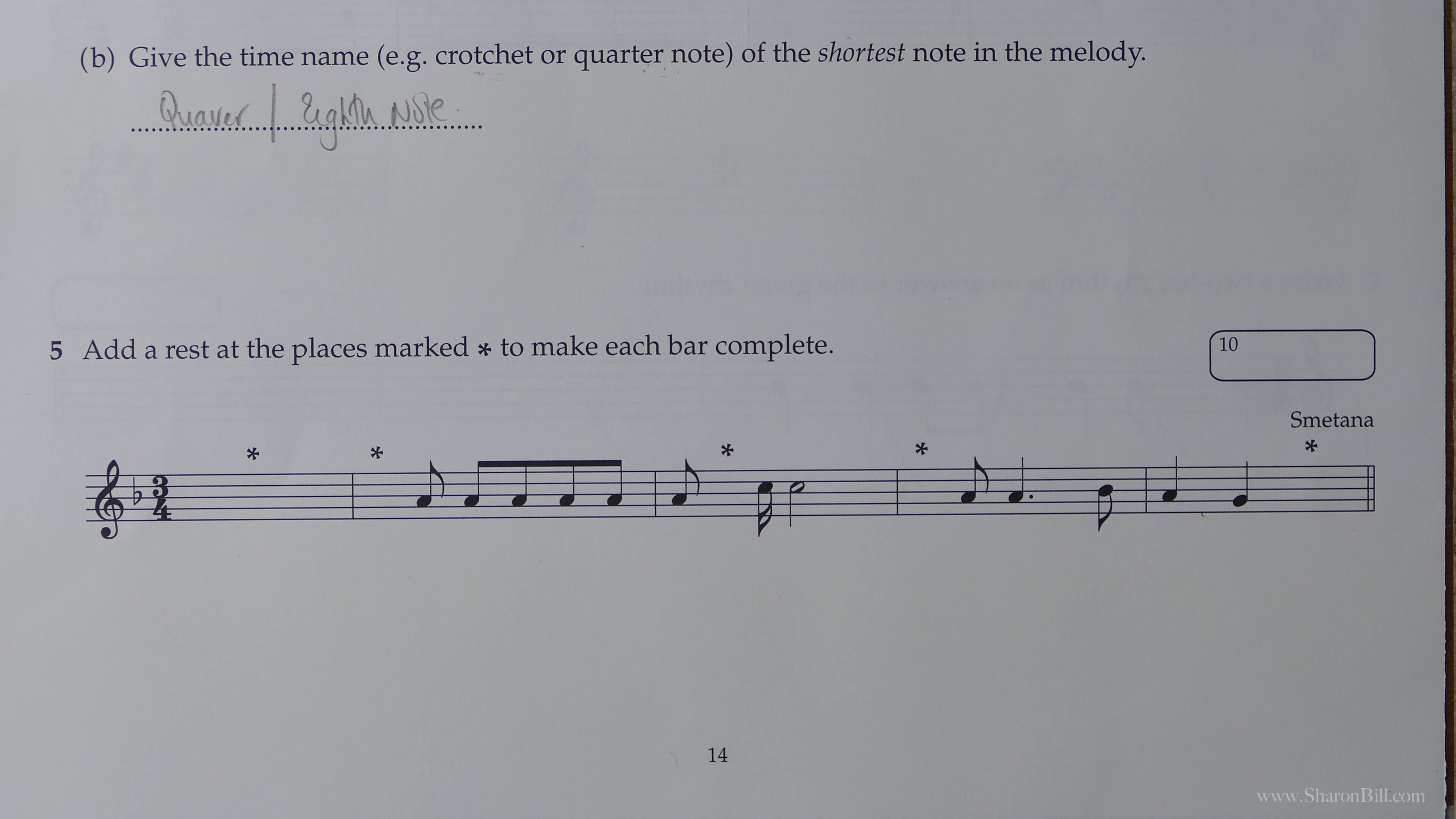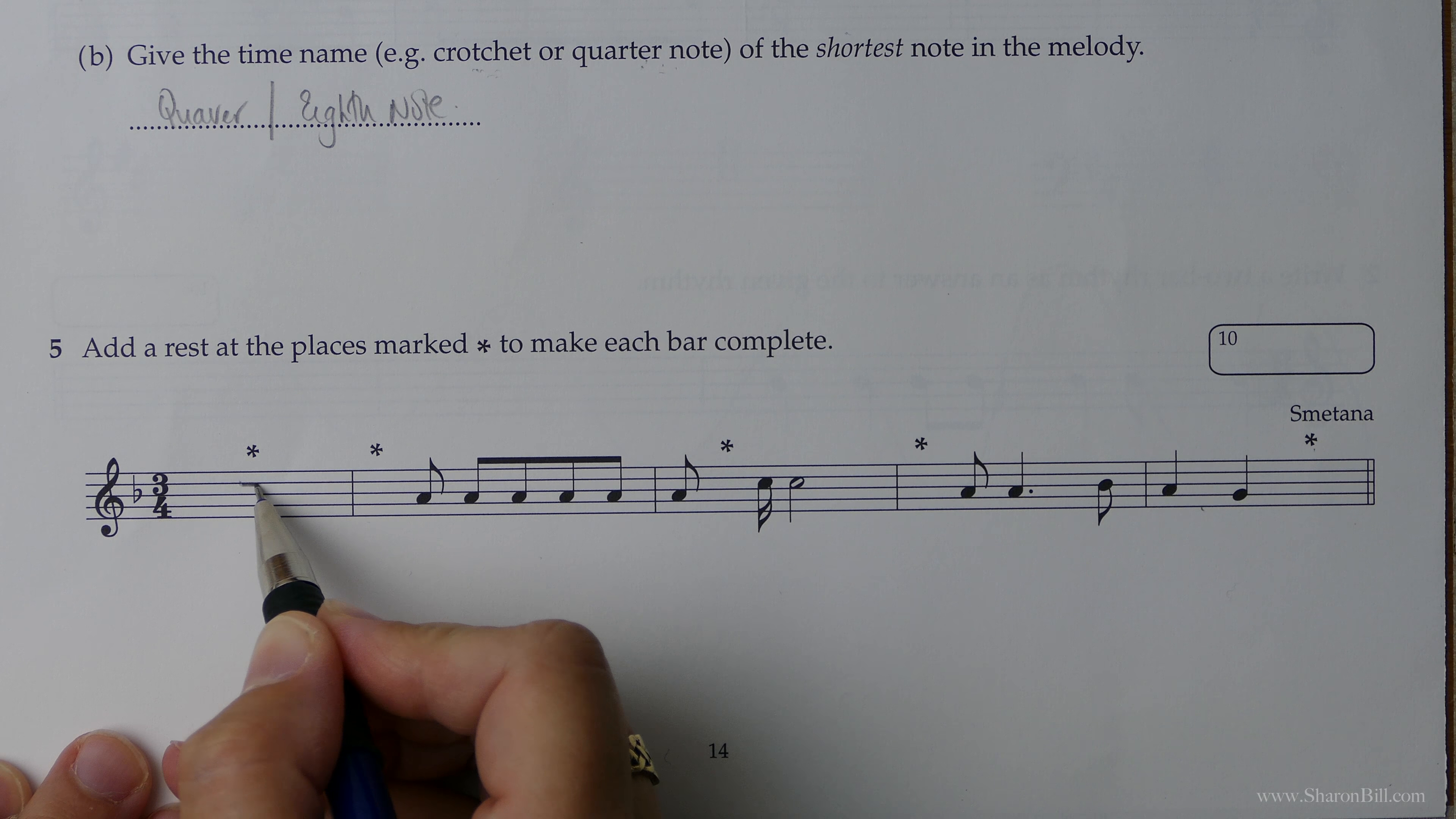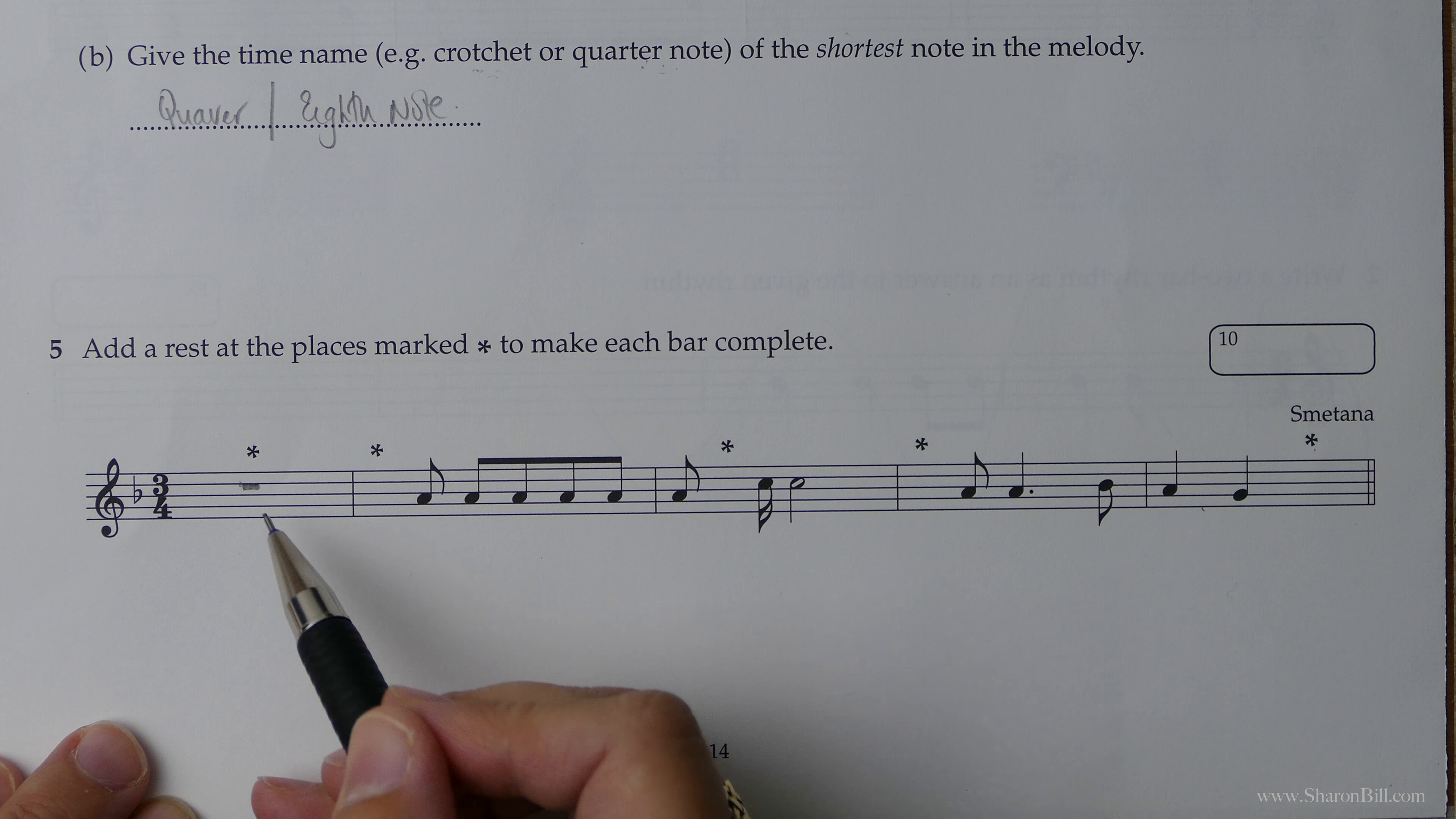And so we're asked to add a rest at each of the places marked with a little star to make each bar complete. And we need to bear in mind that there should be three beats in a bar. So this first bar is completely empty. Now you might be forgiven for trying to add up to three to make three bars rest. But if you remember,